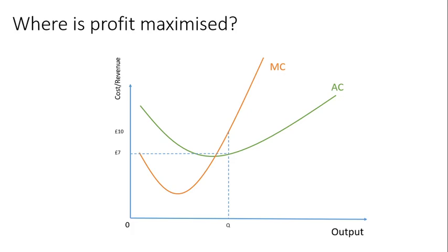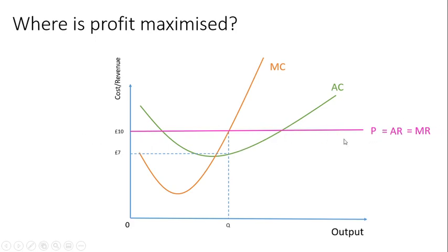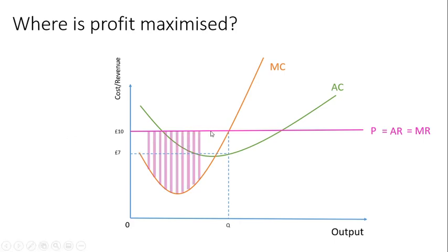Where is profit maximized? If we have a set price, we maximize profit where marginal cost equals marginal revenue. In this case, price equals AR equals MR. As long as that line is perfectly elastic, AR will equal MR. So we produce quantity Q. Any quantity below Q, the marginal revenue is higher than marginal cost, so by increasing quantity we make those little profit increments. But after Q, marginal cost is higher than marginal revenue, and so our profit, although still positive, will be less than maximum.